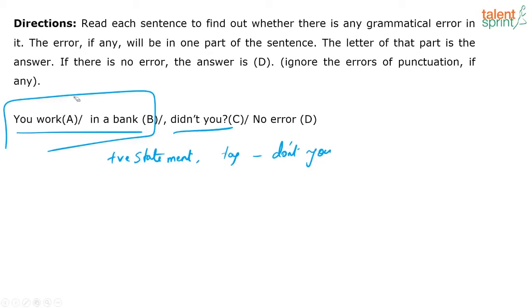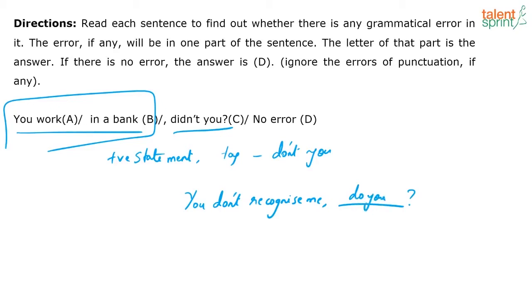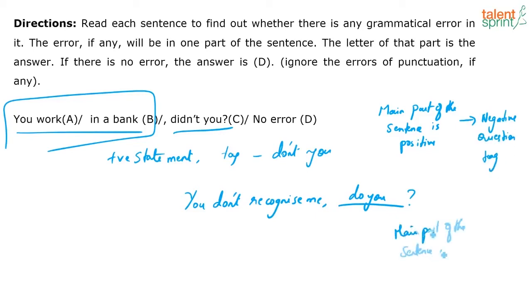So basically, the cornerstone rule is: if the main part of the sentence is positive, the question tag is negative. If the main part of the sentence is negative, the question tag is positive. For example, 'You don't recognize me' — can you complete the tag? The answer is 'do you.' That's it. So we've covered the cornerstone rule: positive main sentence → negative tag; negative main sentence → positive tag.